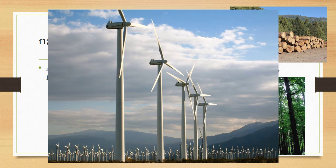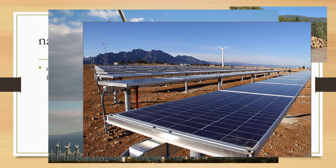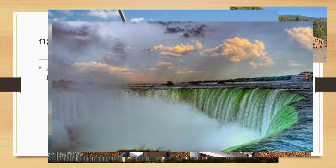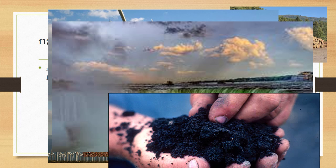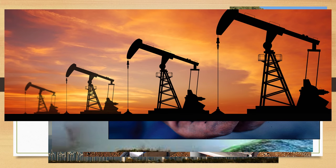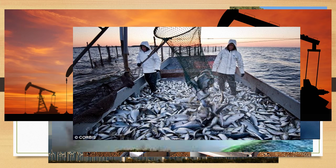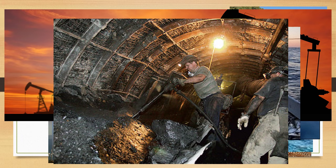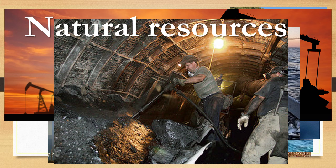Wind is another natural resource. Solar power is a natural resource from the sun. Water is a natural resource, and hydroelectric power can be used by water as well, providing a natural resource as a form of energy. Soil is a natural resource. Oil is a natural resource. Fish and wildlife are a natural resource that we use for eating. And coal is a natural resource that we mine in order to produce a type of fuel. These are all natural resources — they come from nature and are used by man.